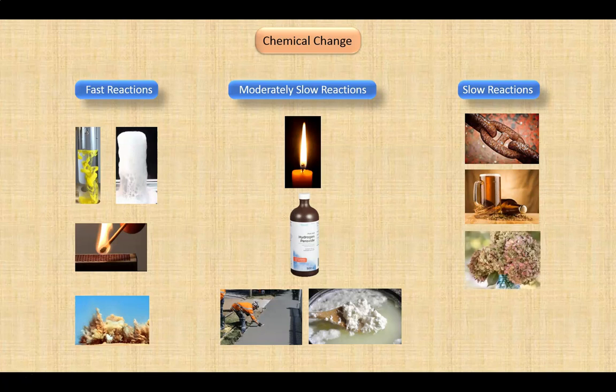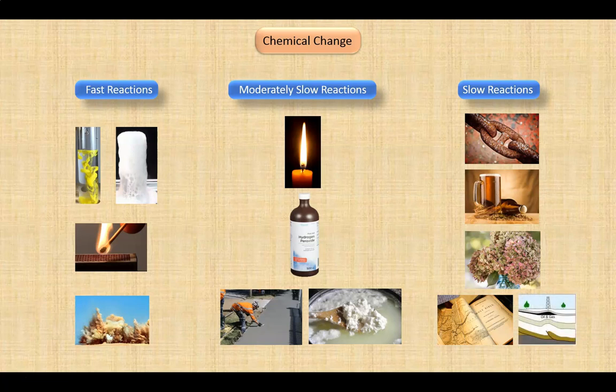Flowers can seem to fade once the pollination period is over. Old newspapers and books will yellow over a long period of time. And the formation of oil and gas from plants and marine life occurs over many thousands of years.